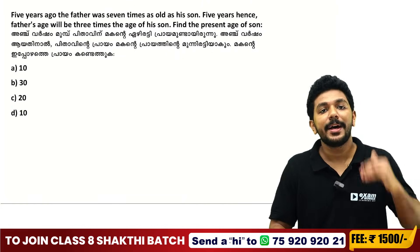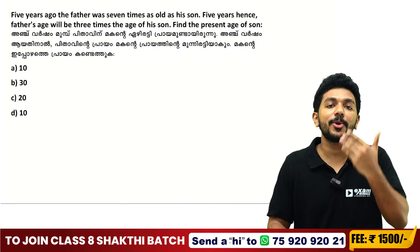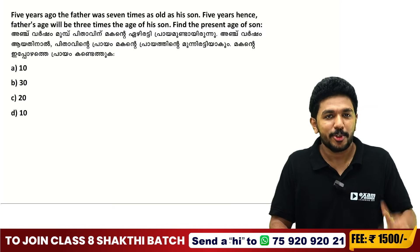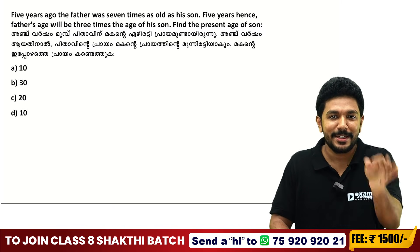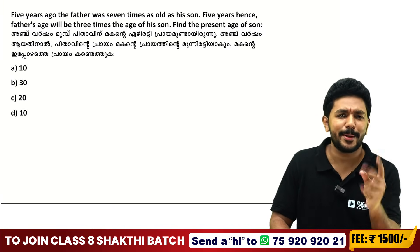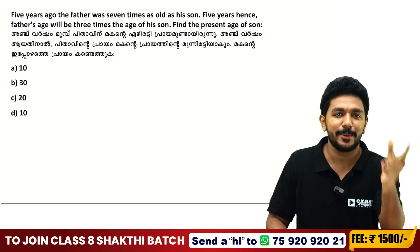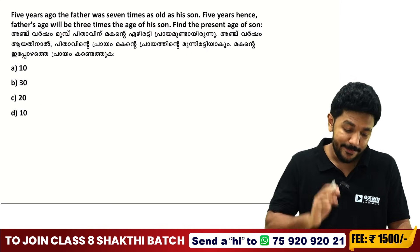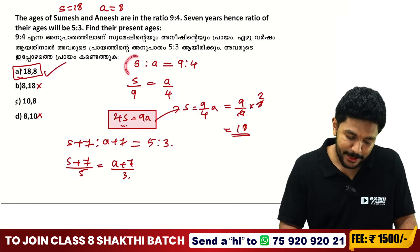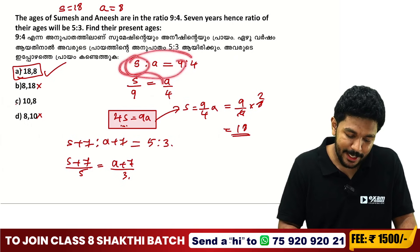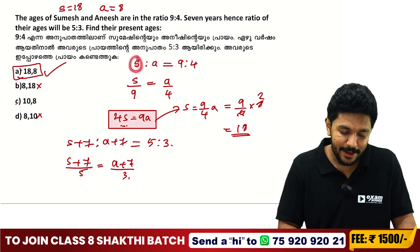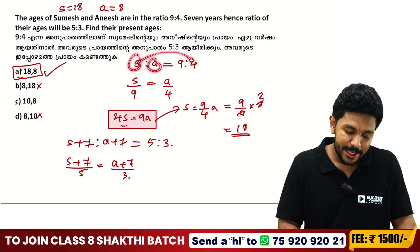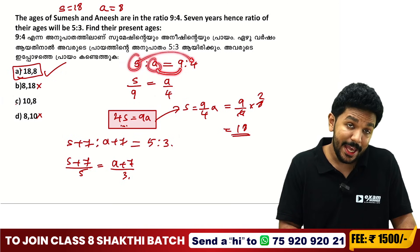Practice these questions. If you practice the questions, you will be able to speed up and solve NMMS questions quickly. A quick trick: for a ratio S to A equals 9 to 4, you cross-multiply — S into 4 is equal to A into 9.